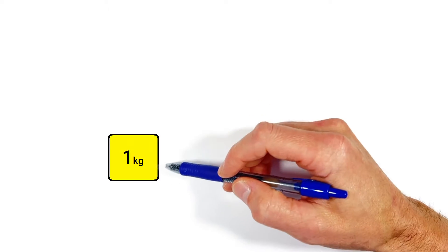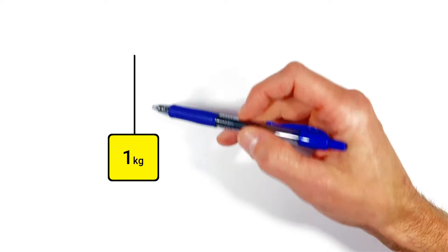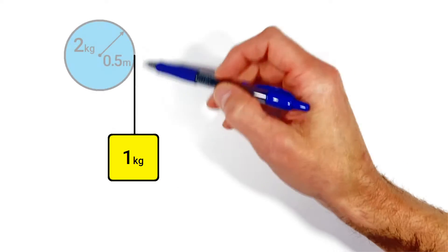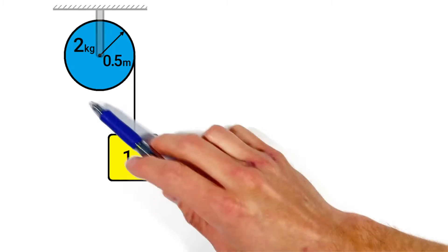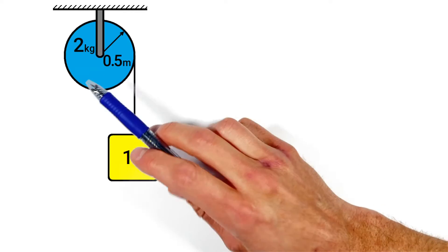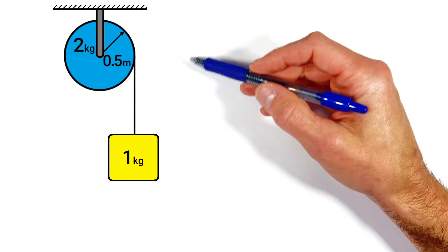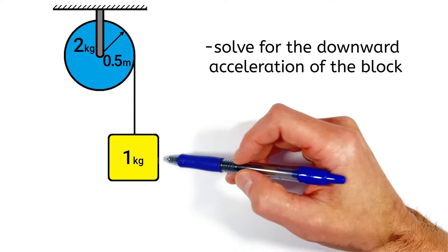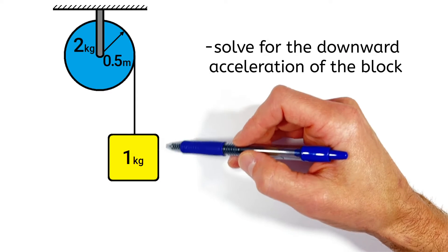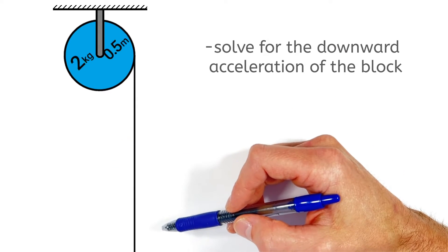Today we're taking a look at a block which is hanging from a string, and that string's been wrapped around a pulley, which is free to rotate around an axle. What I want to do today is show you how to solve for the acceleration of this block as it's pulled downward by gravity.